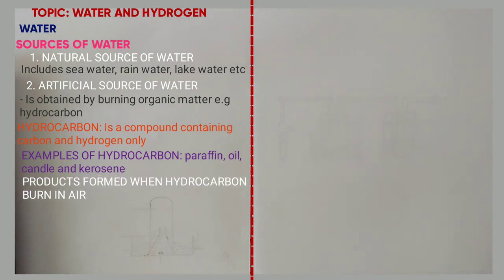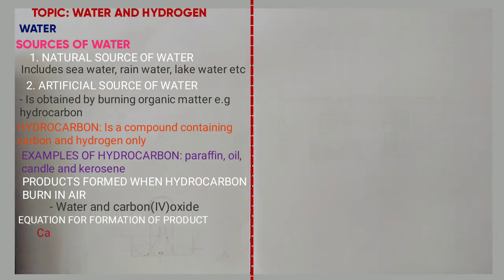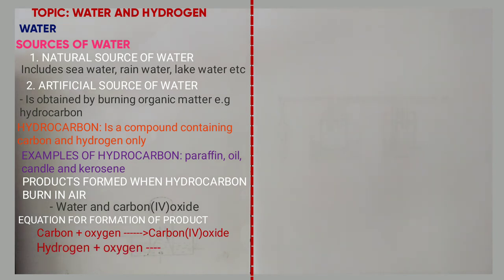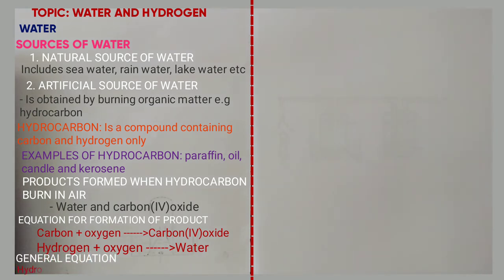they form water and carbon dioxide. The equations for the formation of the different products are: carbon plus oxygen → carbon dioxide; hydrogen plus oxygen → water.